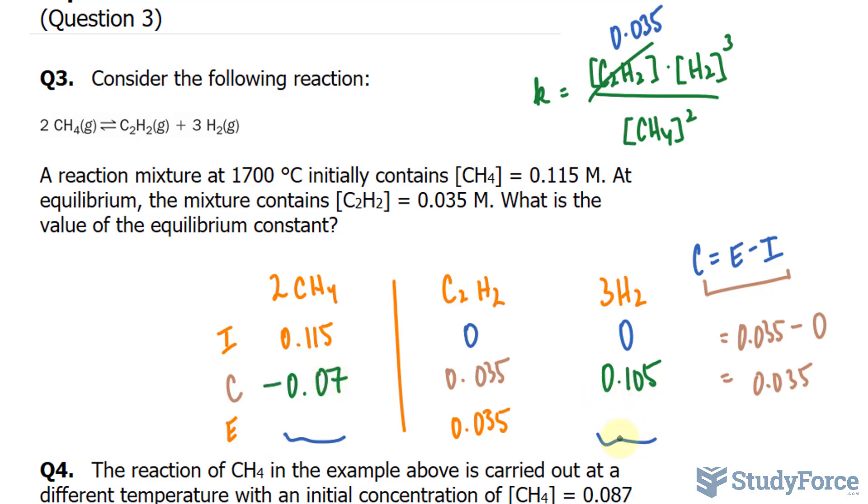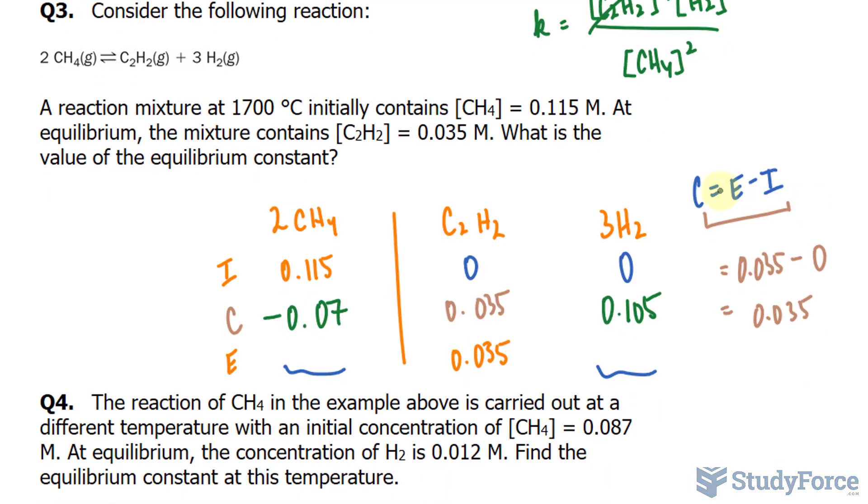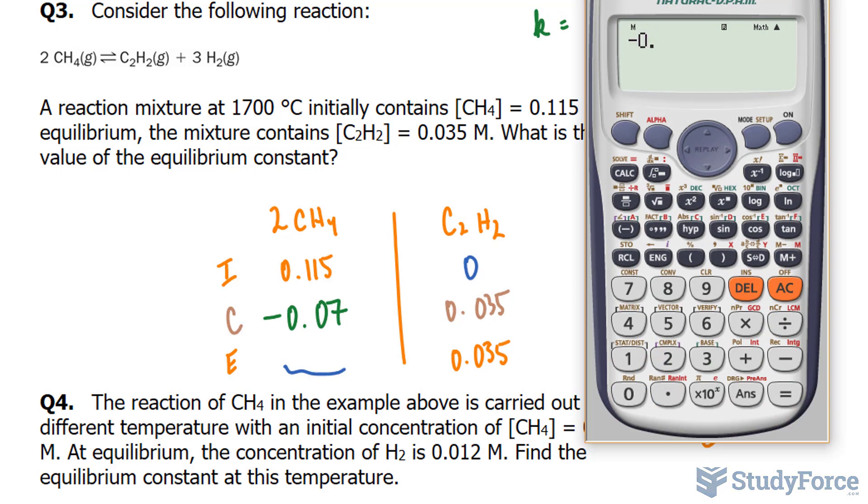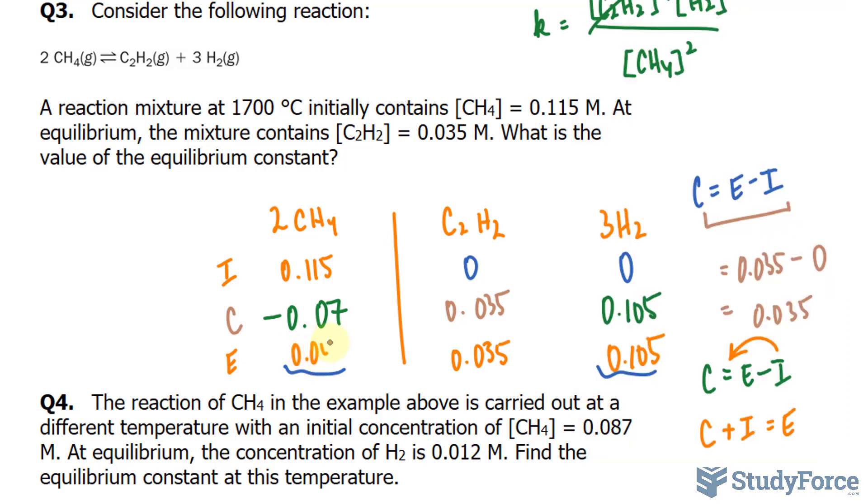Now we can find out the equilibrium concentrations. Using this formula again, we have C is equal to E minus I. I will bring this I over where we have C plus I is equal to E. So C, the change is 0.105 plus 0 is 0.105. That's the equilibrium concentration. And over here if I add up C and 0.115, negative 0.07 plus 0.115 gives us 0.045.